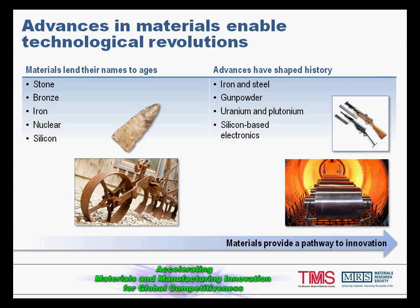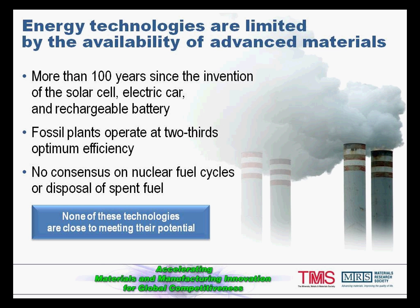If you look at technology broadly, you will find that it has always been enhanced by the availability of materials. And in fact, there are many technologies even today that should be much better than they are. It's been 100 years since we saw the invention of the solar cell, the electric car, or the rechargeable battery — we're certainly not where we need to be with those technologies. That's a materials problem. Fossil plants operate about two-thirds of their optimum efficiency because we don't have materials that can survive in that environment, and we obviously have no consensus on nuclear fuel cycles. None of these technologies are close to their potential because of barriers in materials.